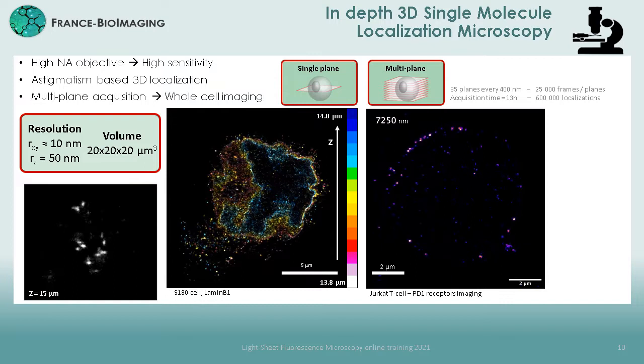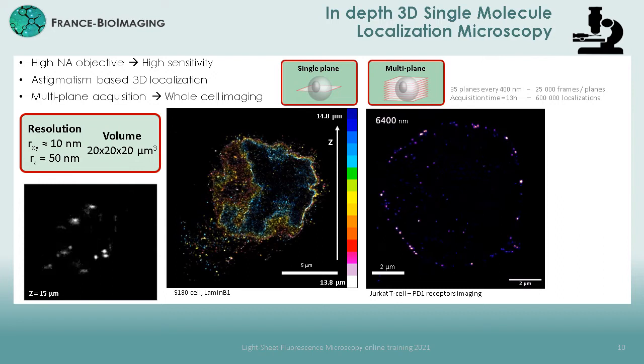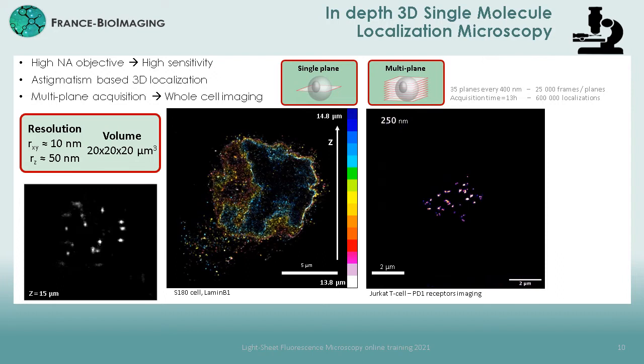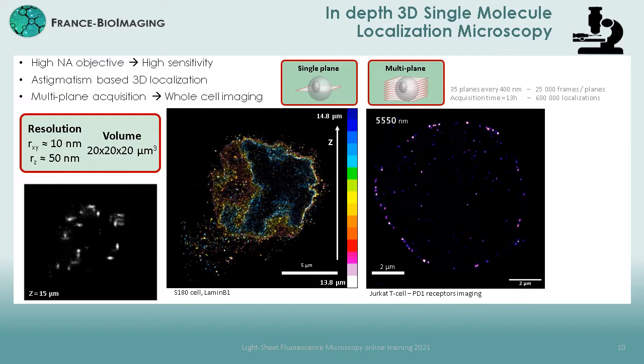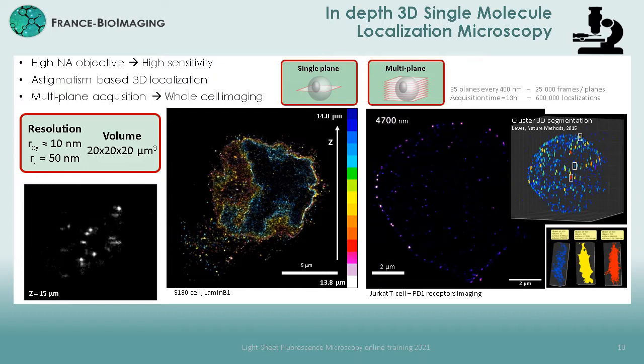Then, we implemented a possibility to sequentially and automatically acquire tens of planes, slightly defocused one from the other. This opens the possibility to image entire cells over a volume of around 20×20×20 cubic micrometers with nanometric resolution. In this case, we imaged the PD-1 receptor on the membrane of suspended Jurkat T cells. This represented 35 planes acquired every 400 nanometers, with 25,000 frames acquired per plane, for a total acquisition time of 13 hours and 600,000 localizations detected.